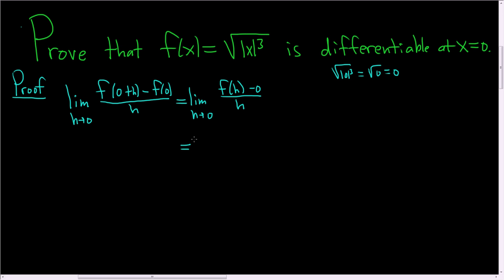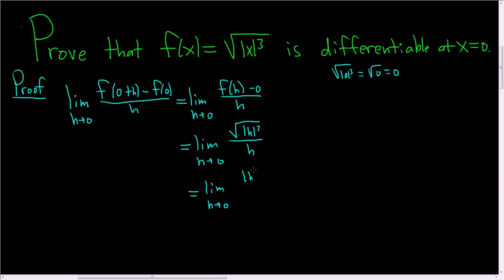So this is equal to the limit as h approaches 0. f of h is just f of x with all the x's replaced by h's. So this is the square root of the absolute value of h cubed, minus 0, over h. Now, if you plug in 0 here, you see that it doesn't work very well. So the trick is to rewrite this in a more convenient way. This is the limit as h approaches 0 of the absolute value of h to the 3 halves over h.